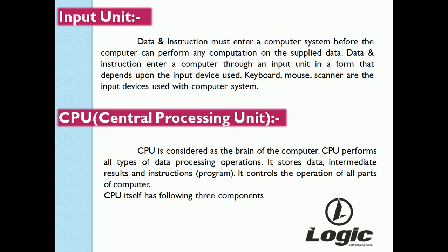Next is the CPU — central processing unit. The CPU is considered as the brain of the computer. It performs all types of data processing operations and stores data, intermediate results, and instructions.